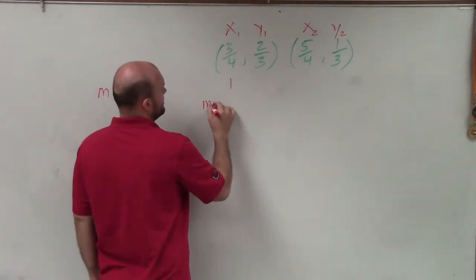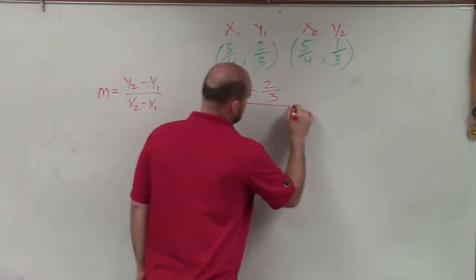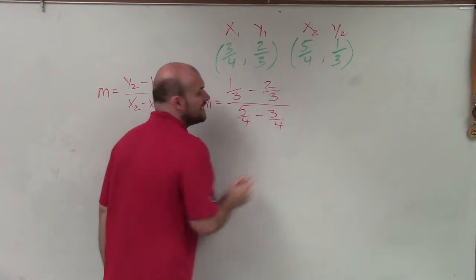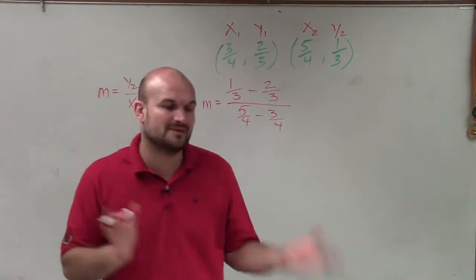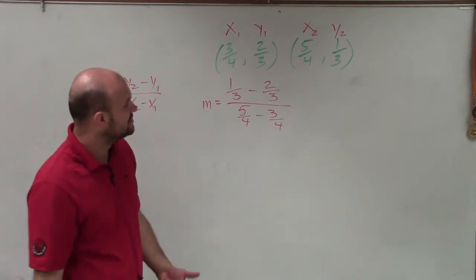So I have m equals 1 third minus 2 thirds divided by 5 fourths minus 3 fourths. And again, it doesn't really matter which ones you label as x1, y1, x2, y2.